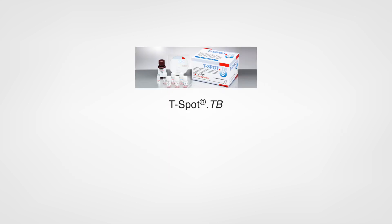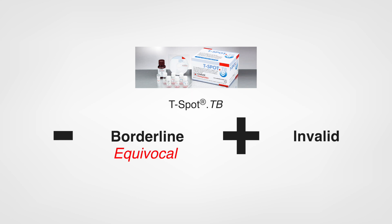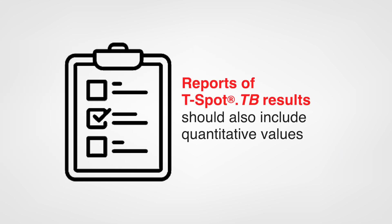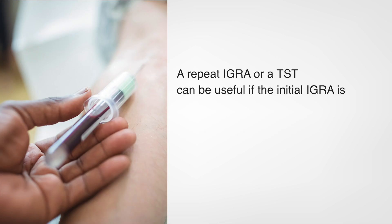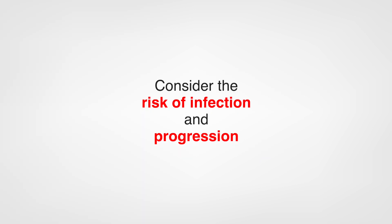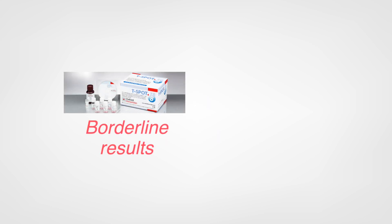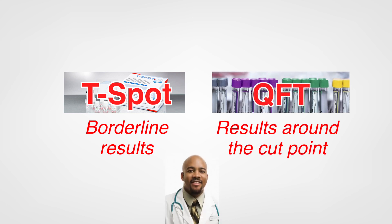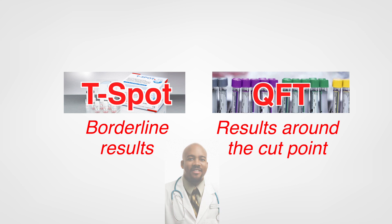Results for the T-SPOT TB test are reported as negative, borderline, positive, or invalid. Borderline results are considered equivocal — neither negative nor positive — and represent a zone of uncertainty. An invalid T-SPOT TB test result represents a test failure. Reports of T-SPOT TB results should also include quantitative values. A repeat IGRA or a TST can be useful if the initial IGRA is indeterminate, invalid, or borderline. Consider the risk of infection and progression when assessing quantitative and qualitative IGRA results, particularly borderline results from the T-SPOT TB test or results around the cut point with QFT. Consult a TB expert for repeat borderline, invalid, or indeterminate results.